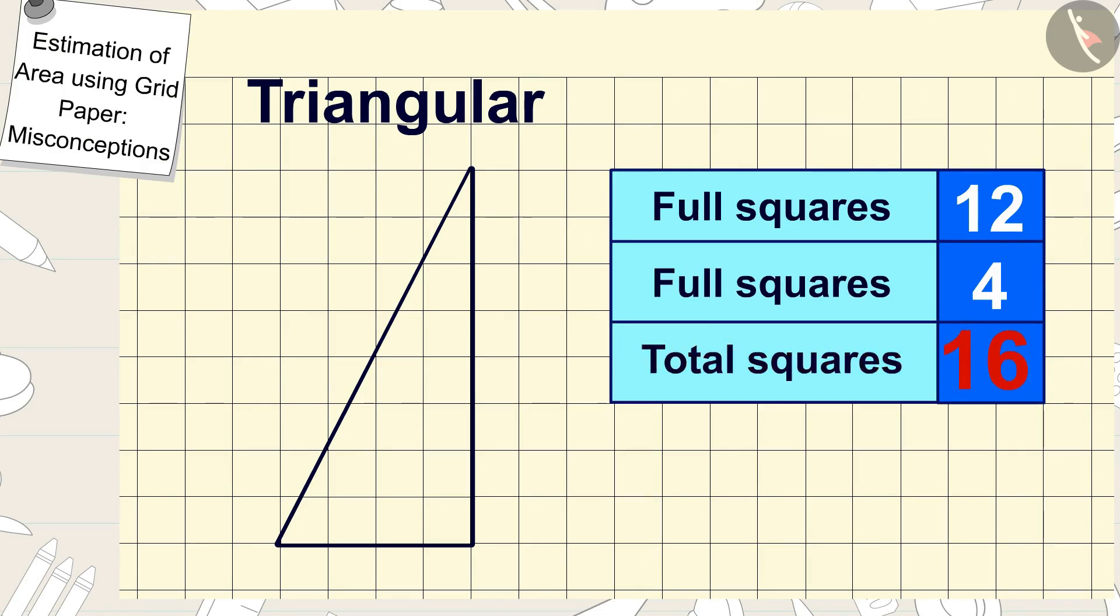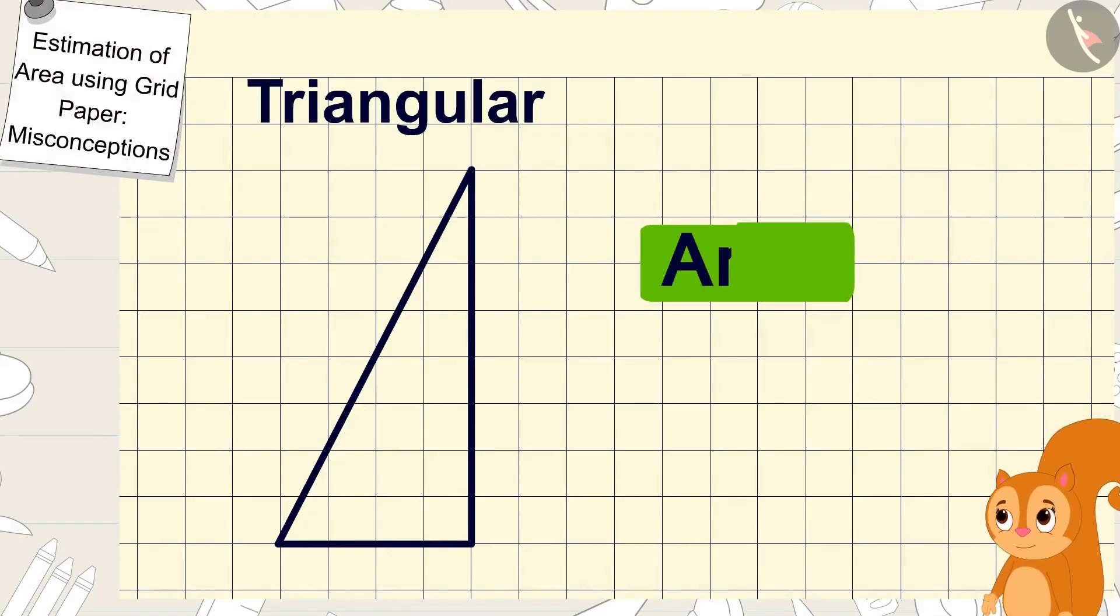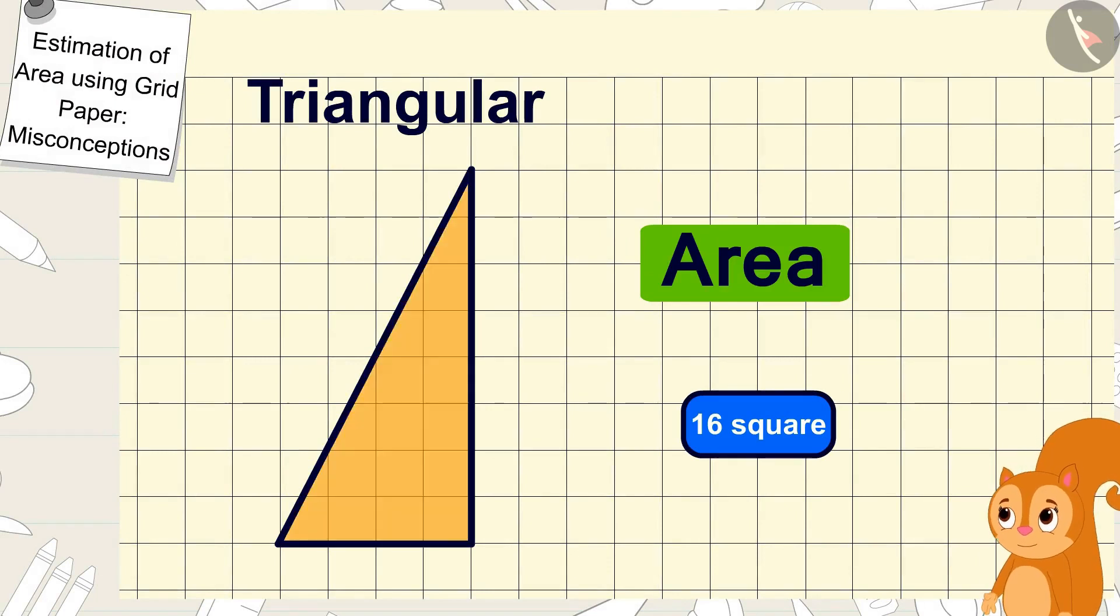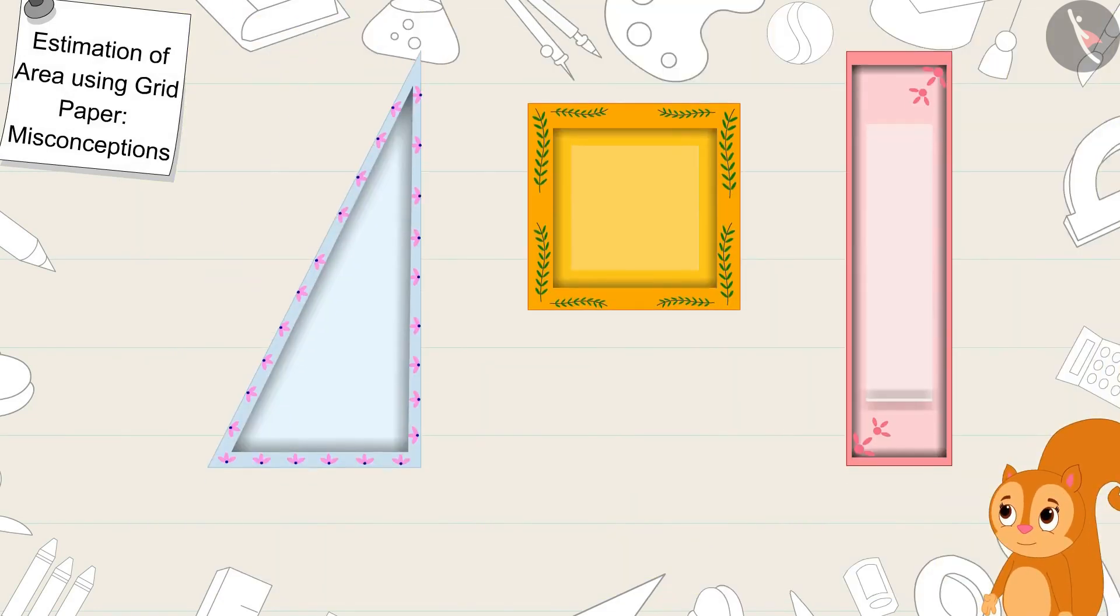Chanda too found the area of the triangle shaped plate just like you. Hey Gaggoo, there are 16 squares in the area of this triangle shaped plate too. You are right, the shapes of these plates may be different but their areas are exactly the same, Chanda said to Gaggoo.